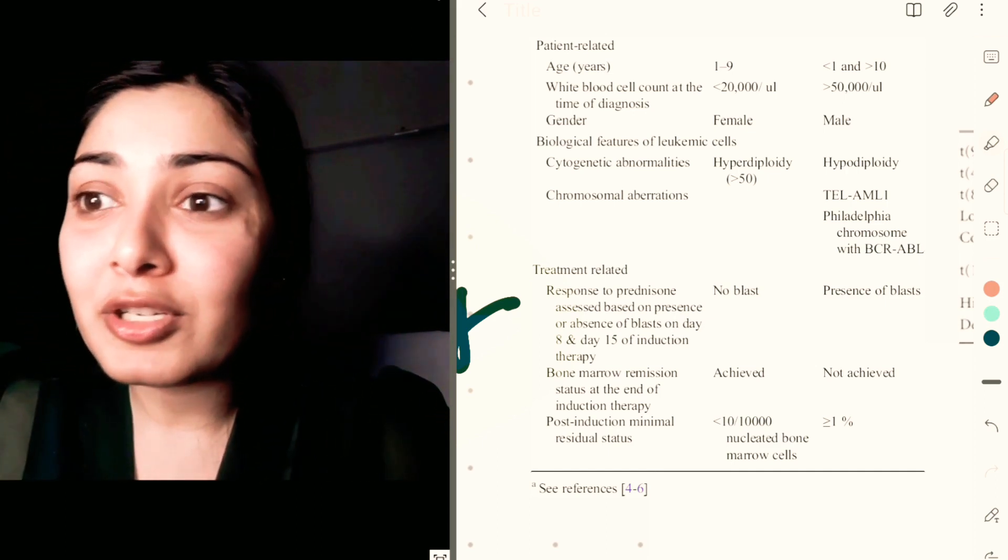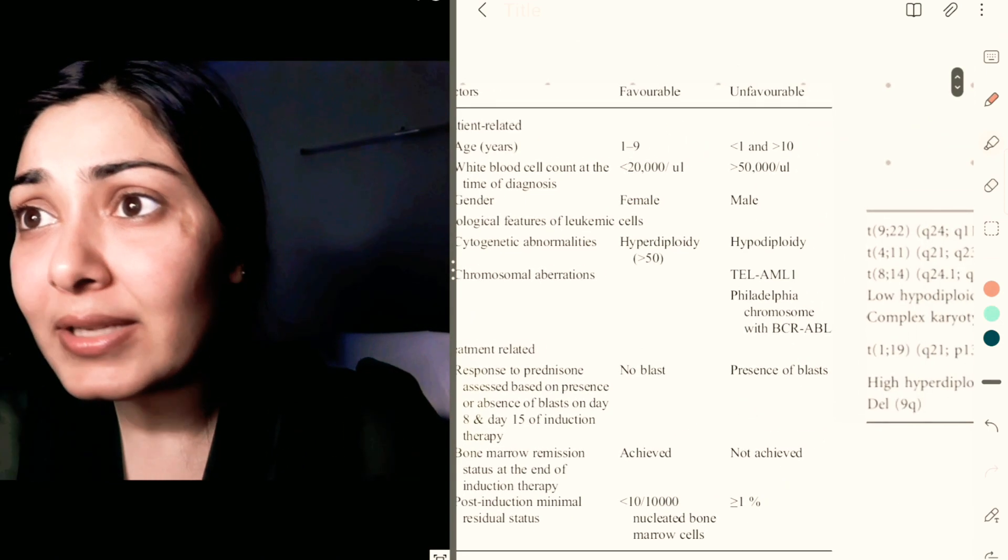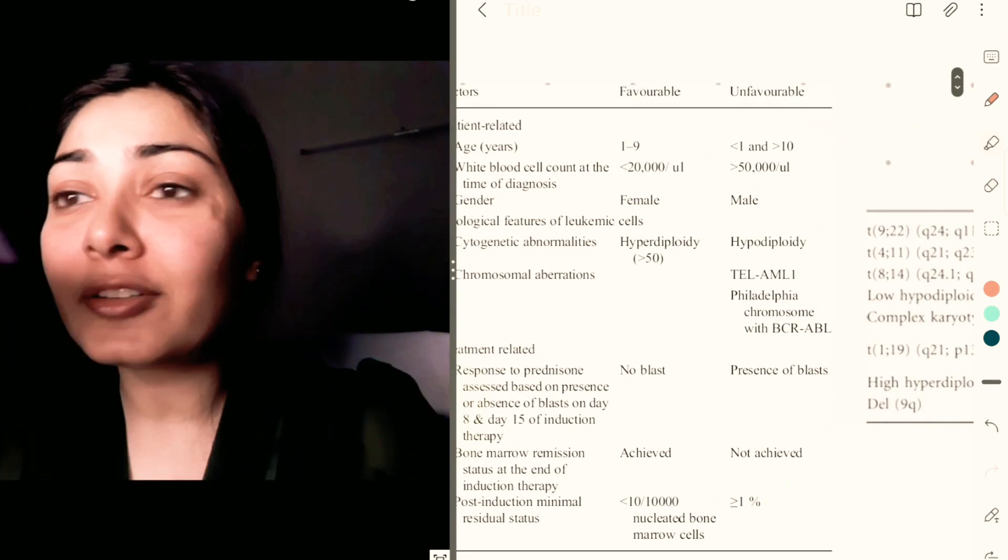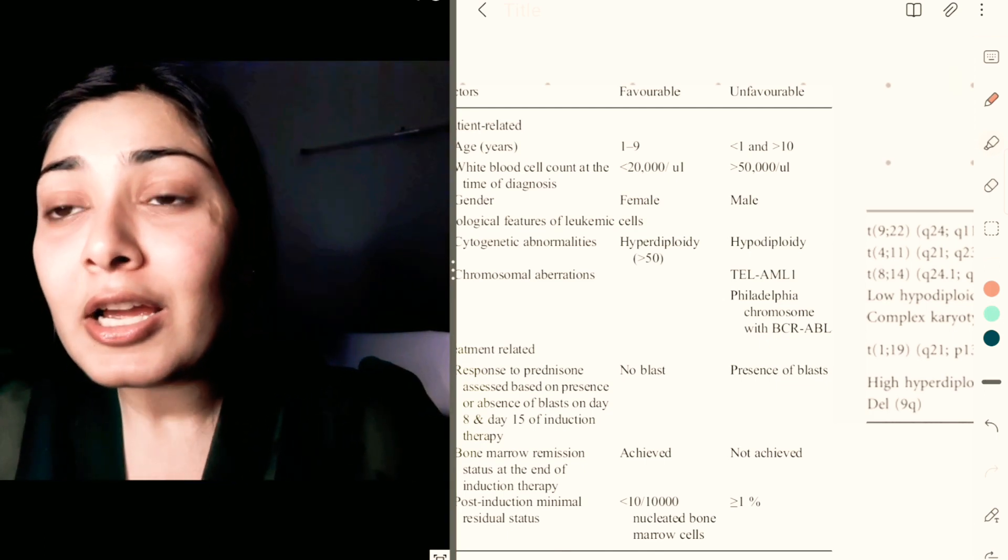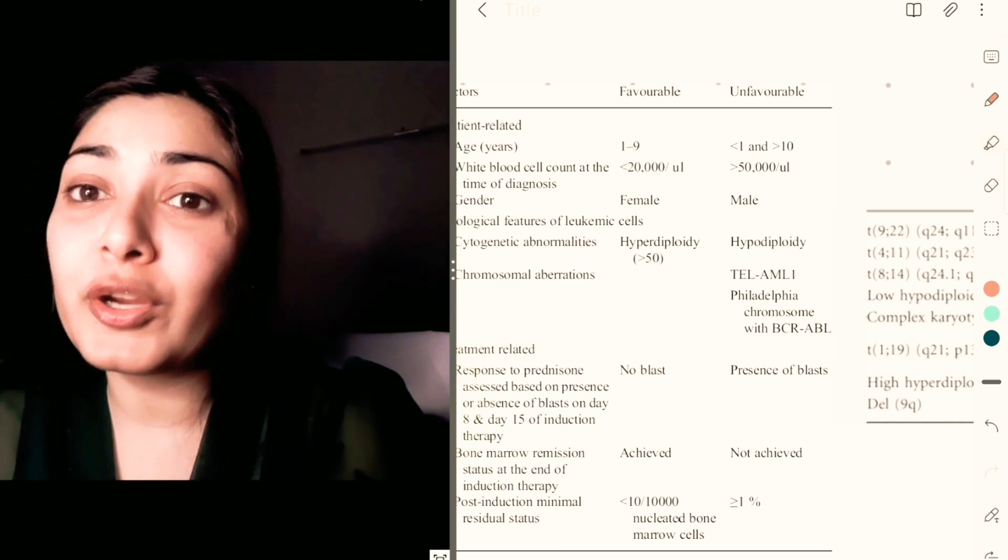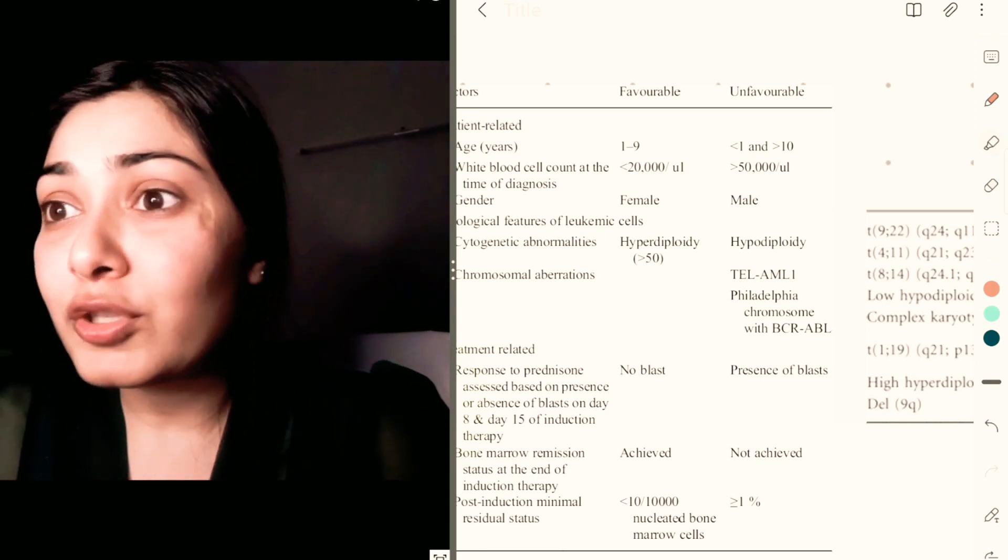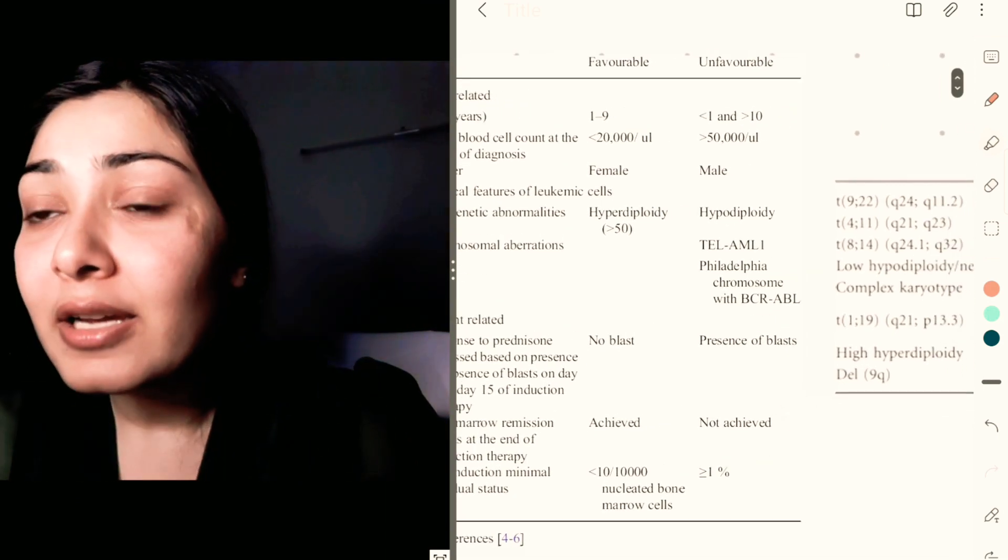Unfavorable are age less than 1, more than 10, counts more than 50,000, male gender, hypodiploidy as a bad prognostic factor, Philadelphia chromosome, and presence of blasts after induction therapy.